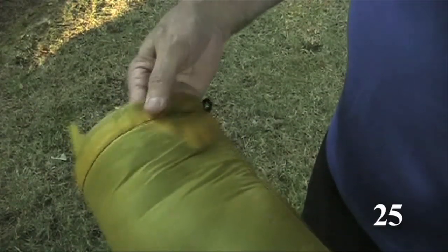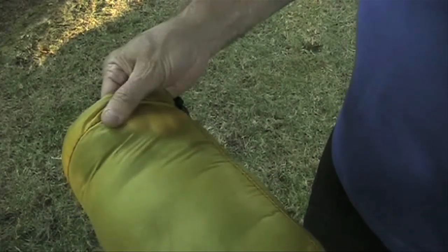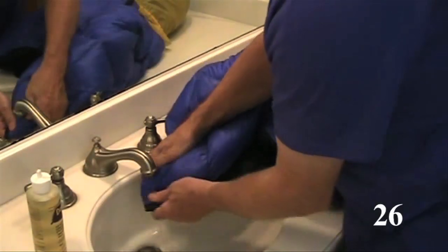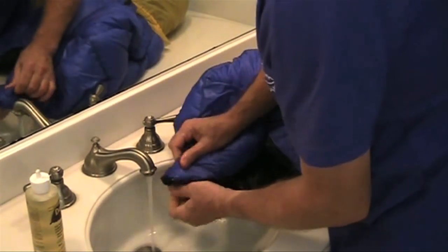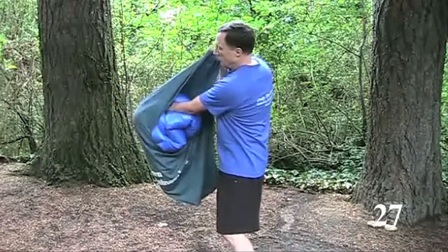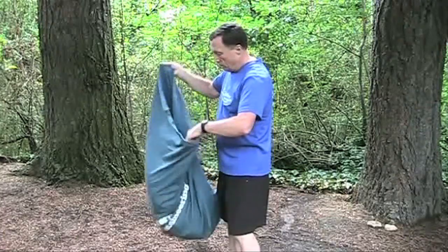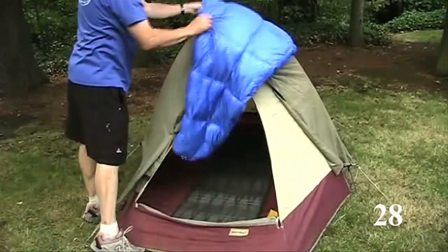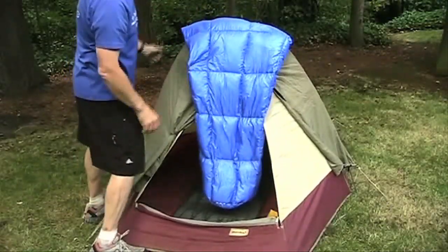An ultralight stuff sack made of 1.3 ounce silicone coated nylon can be only 6 tenths of an ounce. Keep your sleeping bag clean. That keeps the efficiency high. Keep your bag in a large storage sack to retain full loft and efficiency. Air out your bag during lunch and as soon as you get to camp so it can fully loft.